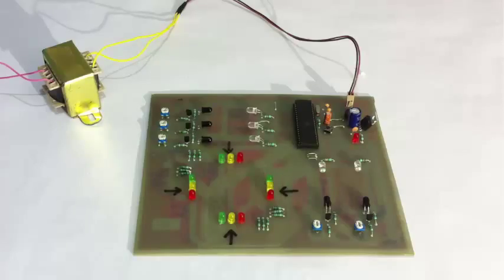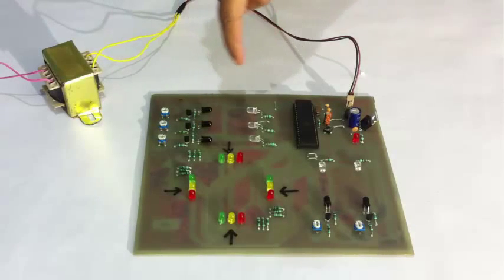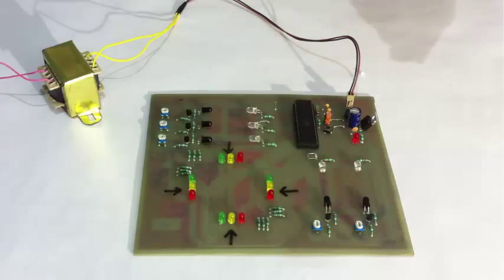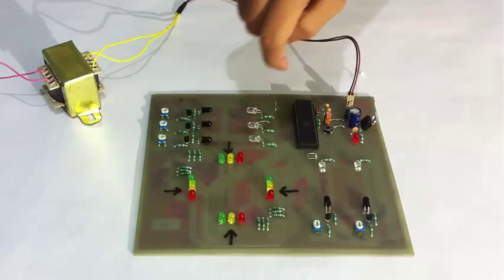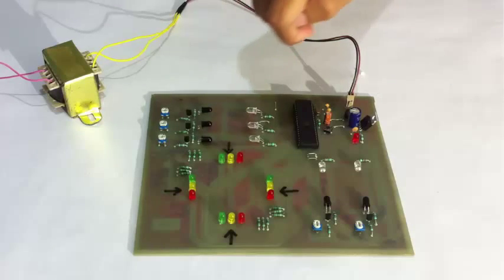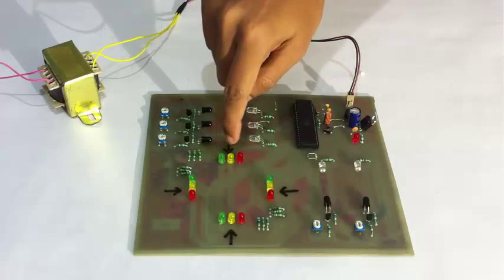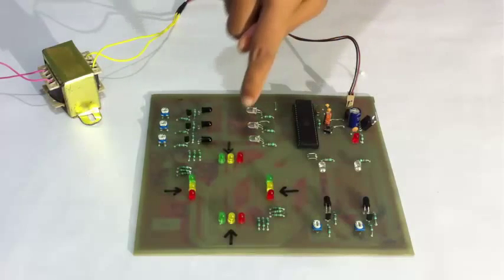As you can see the setup here, we use the 12 volt transformer. These are the IR transmitters and receivers here and these color LEDs are used to demonstrate as green, yellow and red signal at particular post.